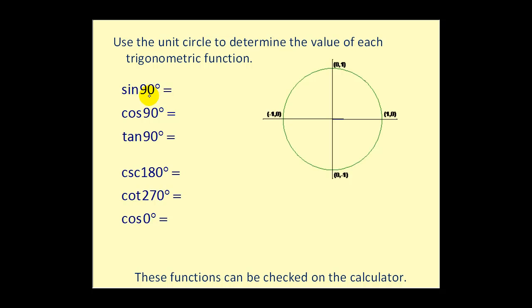Let's use the unit circle to find each trig function. Sine 90 degrees: sketched in standard position, we can't form a right triangle, but since sine theta equals y on the unit circle, sine 90° equals 1. Cosine 90° equals x, which is 0. Tangent 90° equals y over x, which is 1 over 0 — undefined.